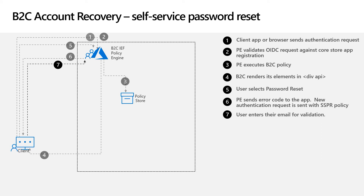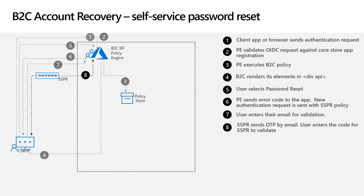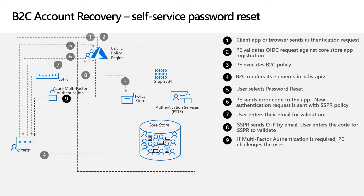Then you will see an email verification screen, used to verify that you own this account. Once you enter your email and hit send code, the self-service password reset service will send a one-time passcode to your inbox. You can then enter the code and the self-service password reset service will validate it. If multi-factor authentication was enabled on your account, the policy engine challenges you through the Azure MFA service. If you haven't provided a phone number earlier, we will ask you for one; otherwise, we will verify you using the phone number we already have.